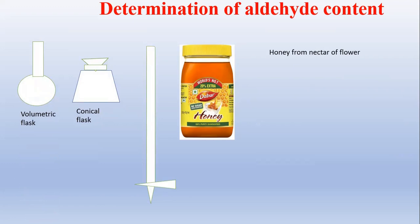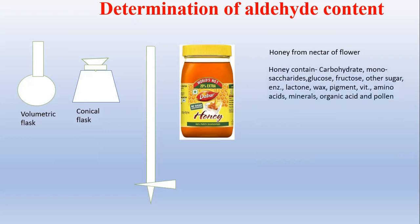Depending on the flowers, the content may vary, so the concentration in honey also plays an important role. Honey contains different types of chemical components such as carbohydrates, which is the most common one, then monosaccharides, then glucose, fructose, and other sugars along with enzymes, then lactone, wax, and pigments.